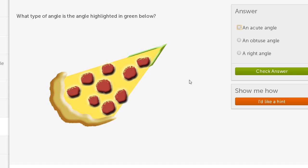Let's do another one of these. What type of angle is the angle highlighted in green below? Well, this angle is less than 90 degrees. If it was equal to 90 degrees, this thing would come out like this. So this is clearly less than 90 degrees. This is an acute angle.